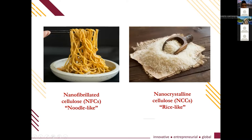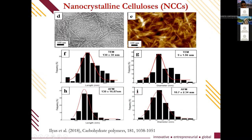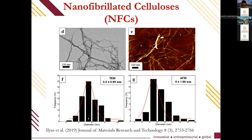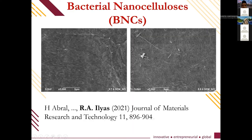You can imagine nanofibrillated cellulose appearing thread-like, while nanocrystalline cellulose looks rice-like. Nanocrystalline cellulose from sugar palm fiber has a length of about 130 nanometers and a diameter of about 9 nanometers, as seen by TEM and AFM. Nanofibrillated cellulose obtained using mechanical treatment by high-pressure homogenization has a length above one micrometer and a diameter of about 5.5 nanometers.